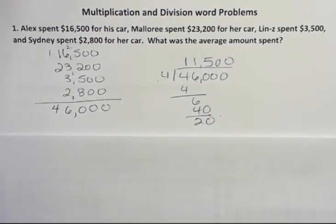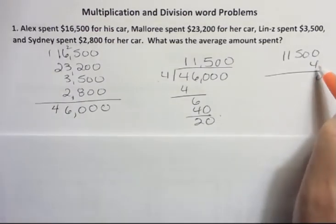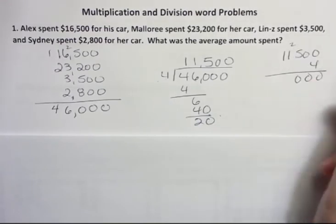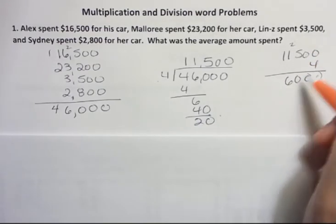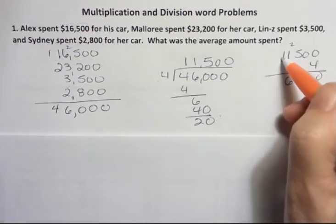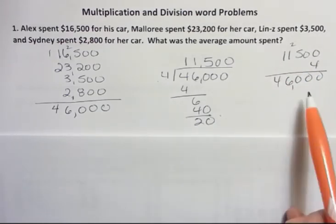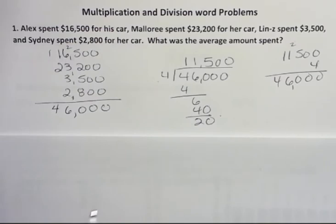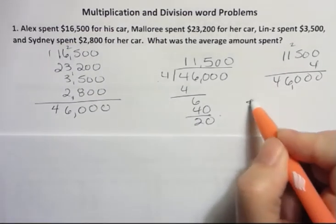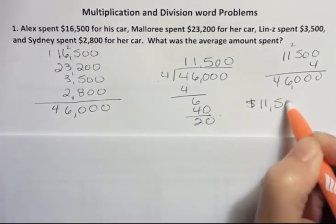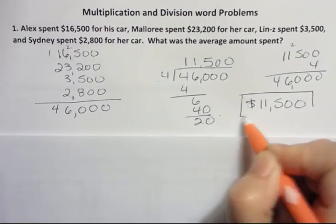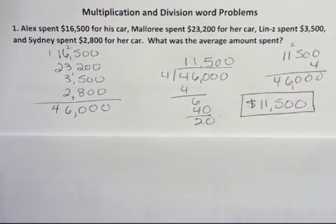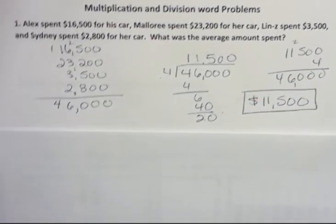So it looks like they averaged $11,500. If I want to check that I can check it by multiplying: 4 times 0, 5 times 4 is 20, 4 plus 2 is 6, and 4 times 1 is 4. Sure enough, when I multiply that I get $46,000. So the average amount spent was $11,500. Remember, you can always check division with multiplication.